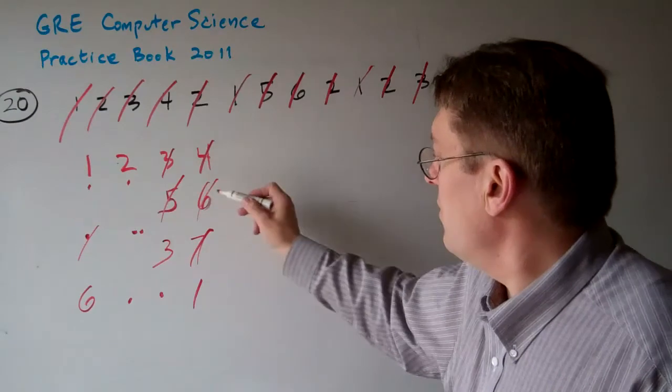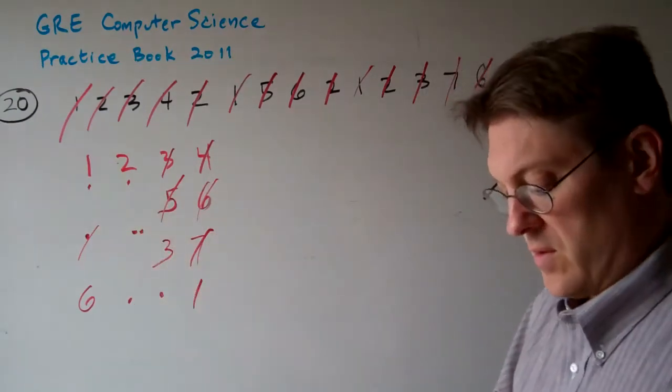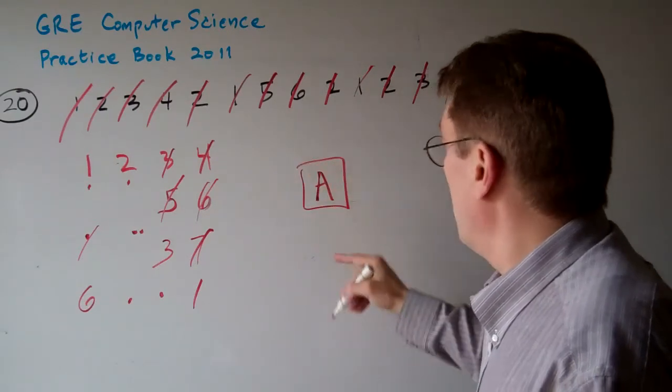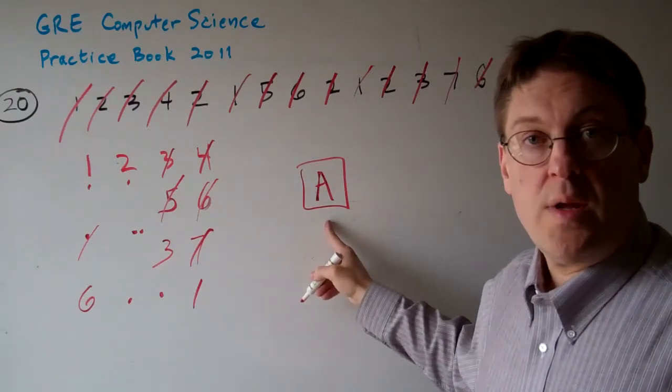So there's one, two, three, four, five, six page faults. So the answer for question 20 is six.